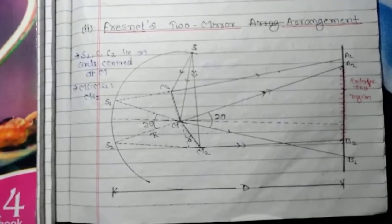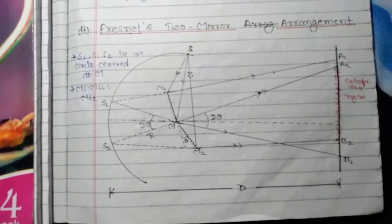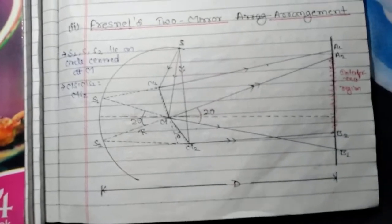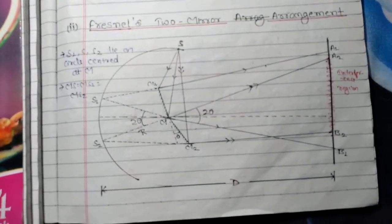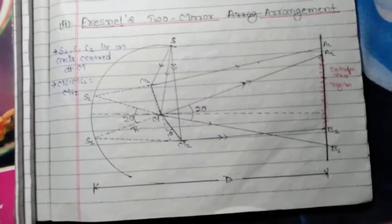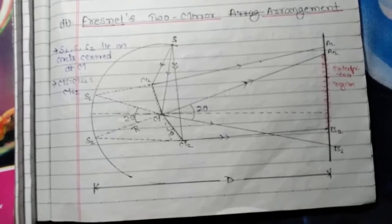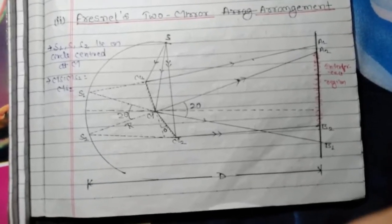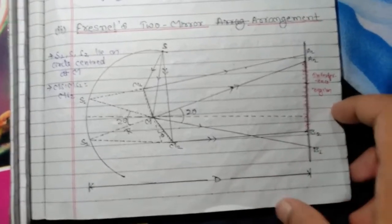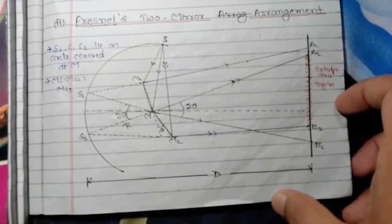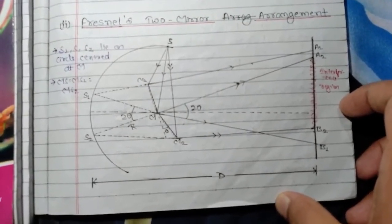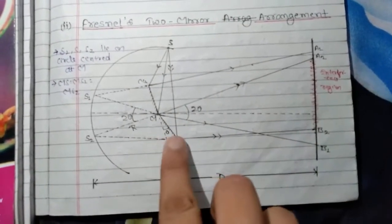Fresnel two-mirror arrangement. Fresnel was a scientist. In this experiment, he used two mirrors, M1 and M2. He arranged two mirrors such that they are inclined at a very small angle theta.